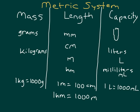We also know that one meter equals 1,000 millimeters. Going over those length abbreviations: MM stands for millimeter, CM stands for centimeter, M stands for meter, and KM stands for kilometer.